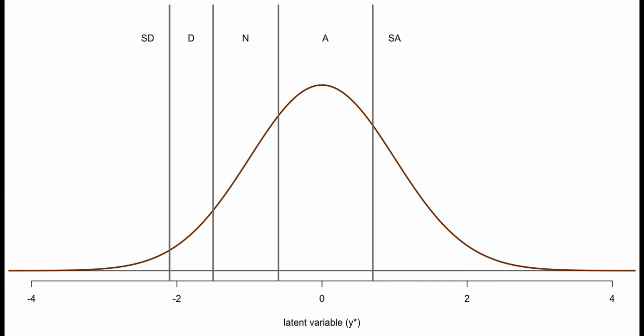For example, if someone had a latent variable score of 2, they would respond strongly agree. Using the context of liking chocolate ice cream: a score of 2 means strongly agree, a score of 0 means agree, and a score of negative 3 would place someone in the farthest region at the bottom of the spectrum — they would strongly disagree that they like chocolate ice cream.